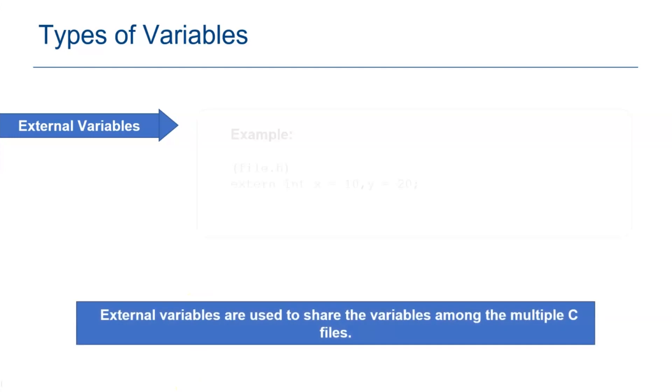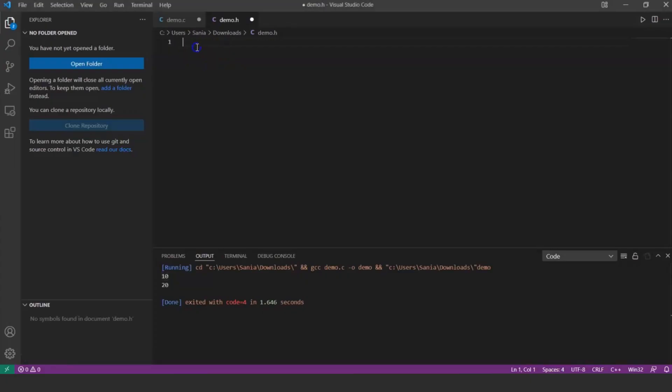Next, external variables share the variables among the multiple C files. To declare external variables, we use the keyword extern. Let's see how the extern keyword works. First, create a file with a dot h extension, a header file, and define a variable with an extern keyword: extern int x equals 10, comma y equals 20.